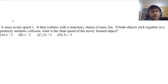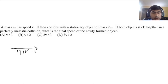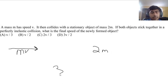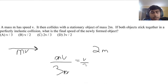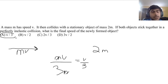A mass M has speed V and collides with a stationary object of mass 2M. Both objects stick together — perfectly inelastic collision. Before collision: momentum vector MV going right, 2M has no momentum. After collision: combined mass 3M with the same momentum MV. So the final speed is MV divided by 3M, which equals V/3. Answer choice A.